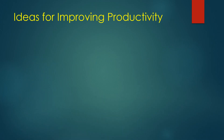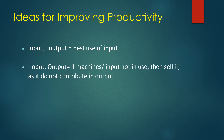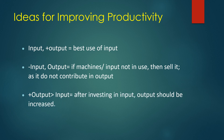Ideas for improving productivity include: keeping the input constant and increasing the output, which is the best use of input. Next is reducing the input while supplying the same output — if machines or inputs are not in use, they should be sold as they do not contribute to output. Next is increasing output at less input, so after investing in input, output should be increased.